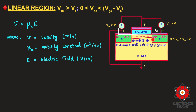The electric field E between source and drain depends on the potential difference VDS and the channel length L, giving E = VDS / L. The time required for electrons to cross the channel, T_CH, depends on both the channel length L and the carrier velocity V, so T_CH = L / V.